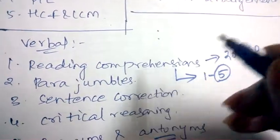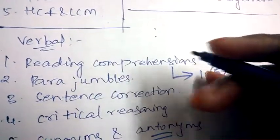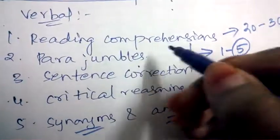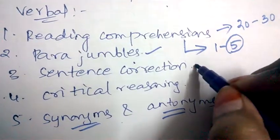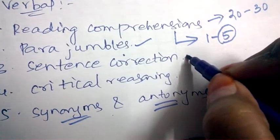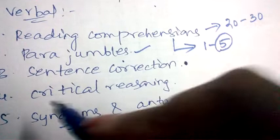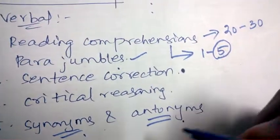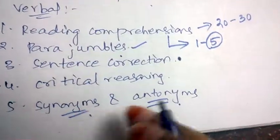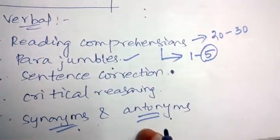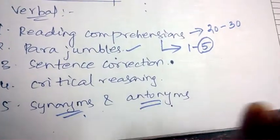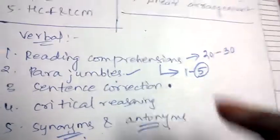Coming to para jumbles, it will be easy. Sentence correction, you need to have little knowledge about the grammar. Critical reasoning, whereas antonyms and synonyms, you need to practice more and more. That is the only tip for cracking antonyms and synonyms. If you don't know the answer, just blindly go for one of the options. Don't waste your time because time is very limited in written test.